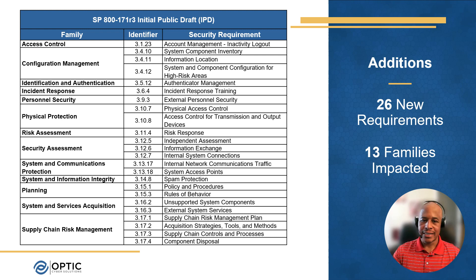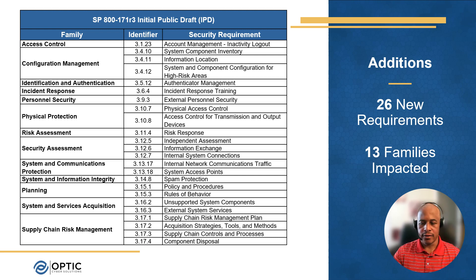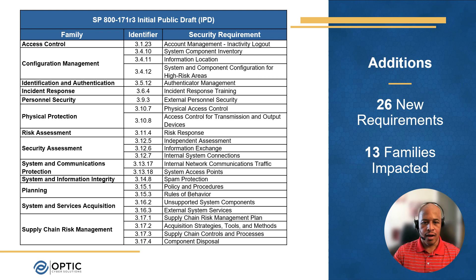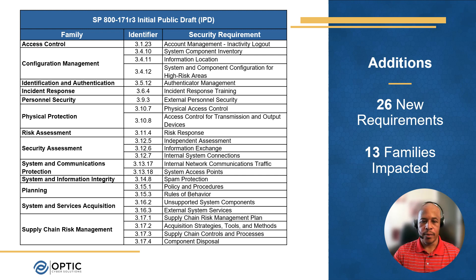Here we have a listing of the additions to 171 Revision 3 draft: 26 new security requirements across 13 control families. Access control has one, configuration management has four, and so on. These are pulled starting from the 53 moderate baseline, then tailored and brought into the new 171 baseline.